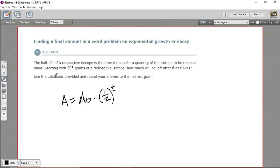So in this particular problem, it says we start with 205 grams. So that's our initial amount, that's our A₀. And they're asking how much will be left after six half-lives. So that's t, that's the number of half-lives.